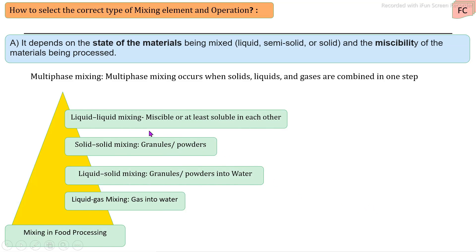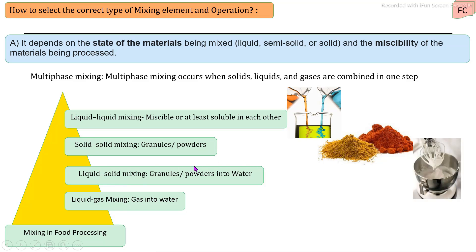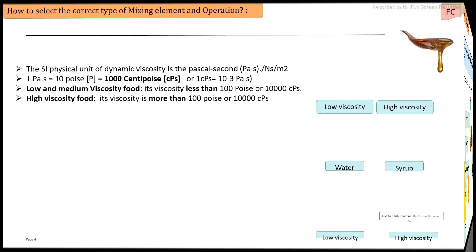As per the state of the material, mixing types include: liquid-liquid mixing — mixing of liquid ingredients with low to medium viscosity; solid-solid mixing — mixing of solid ingredients in the form of powders and granules; liquid-solid mixing — addition of solids into liquids; and liquid-gas mixing — addition of gases like carbon dioxide in carbonation systems. Multi-phase mixing systems combine solid, liquid, and gases together.